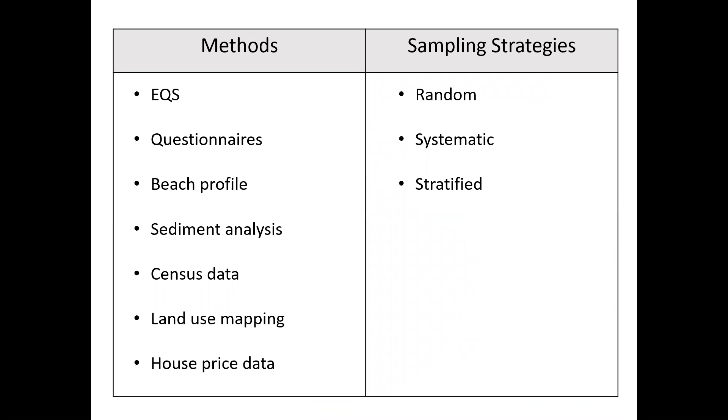Before we begin, we're going to explain the difference between methods and sampling strategies. Now a method is how you collect your data. So we've got things like an EQS, Environmental Quality Survey, Questionnaires, Beach Profile, Sediment Analysis, Census Data, Land Use Mapping and House Price Data. This is not all of the methods you can use, but these are just some of the ones that we use.